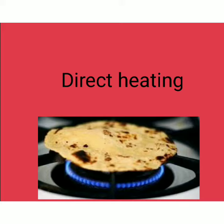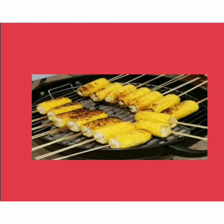Now, the next method of cooking food is direct heating. Direct heating is one of the oldest methods of cooking. Vegetables are often cooked by direct heating on fire. Chapattis are also usually made by direct heating over flame. Children, you enjoy corn and peanuts — we mostly cook them by direct heating method.